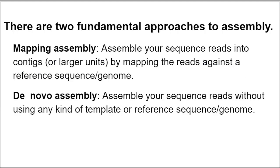In genome assembly there are two fundamental approaches. One is called mapping or reference assembly, and the other is called de novo assembly. Mapping assembly means that you take your sequence reads, or contigs, or even larger units, and you assemble them into larger pieces by mapping those reads against a reference sequence of a genome. In order to do mapping assembly, you need to have quite a bit of information about the organism from which your data is derived. In my lab we would need to know that it is data from the bacterium Vibrio vulnificus and have a high quality finished reference genome from that organism.